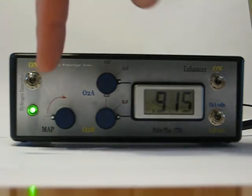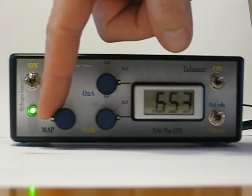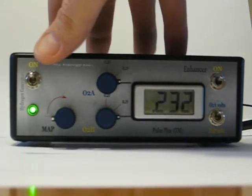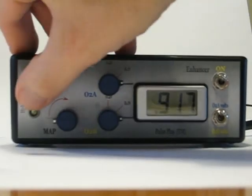We have one MAP, or voltage-based MAF, enhancer here. We have a switch to turn on the hydrogen generator. That's the kill switch that turns it off, turns it on.